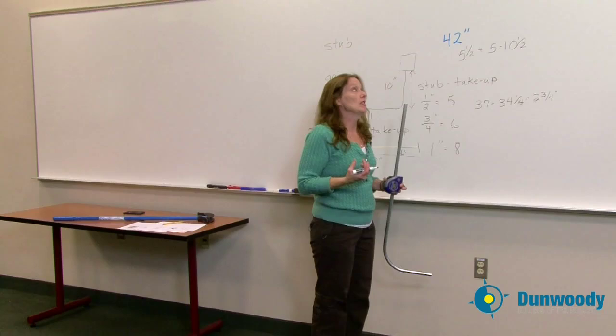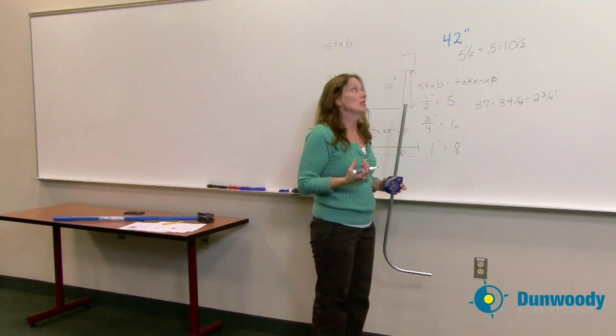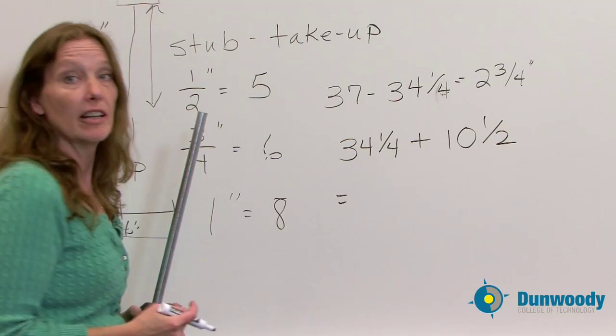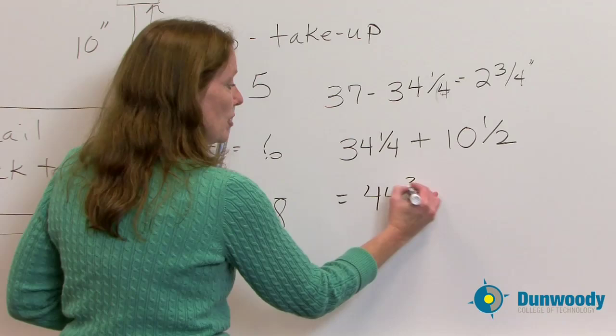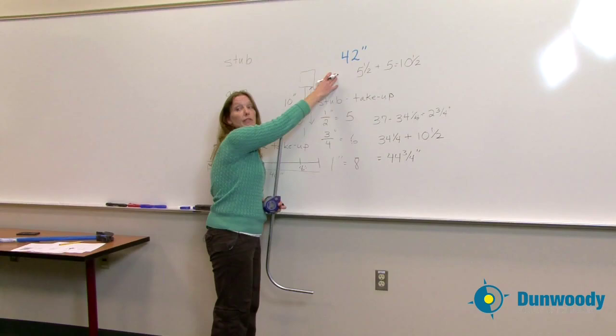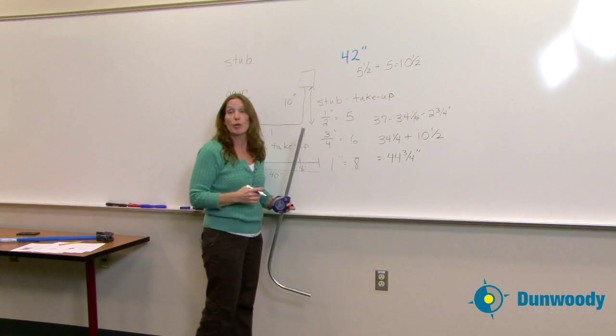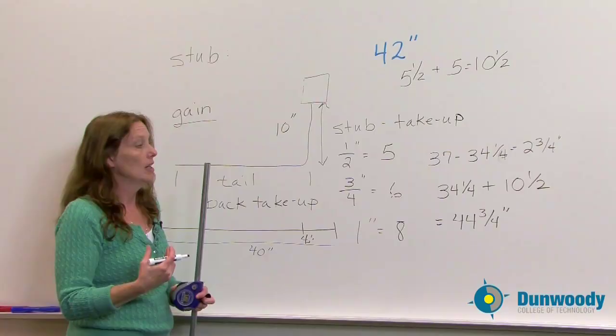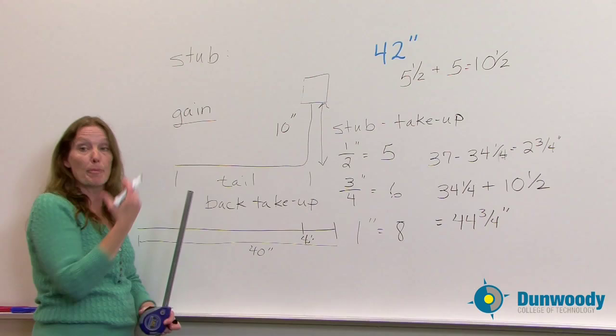So when I take those 2 values and add them together, my 34 and a quarter plus my 10 and a half, I have a total length then of conduit left over of 44 and 3 quarters of an inch. If I look, I actually started with the length of 42. So I've actually gained 2 and 3 quarters of an inch. That's where our gain comes in because of the radius of that 90 degree bend.